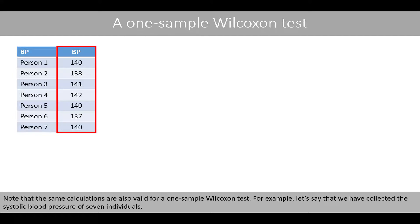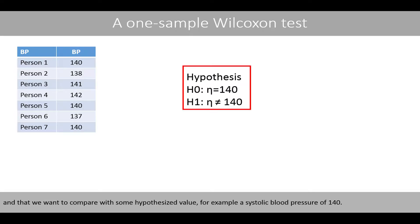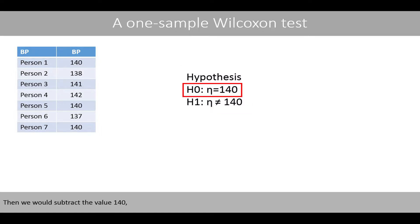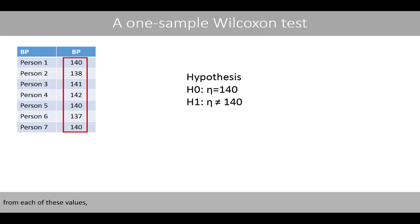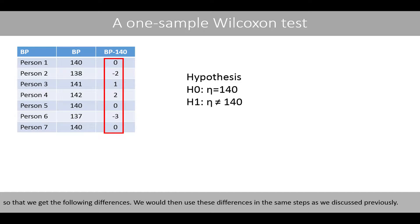Note that the same calculations are also valid for a one-sample Wilcoxon test. For example, if we have collected the systolic blood pressure of seven individuals and want to compare with a hypothesized value — say, a systolic blood pressure of 140 — we would subtract 140 from each value to get the differences, and then apply the same steps as previously described.